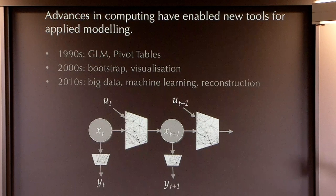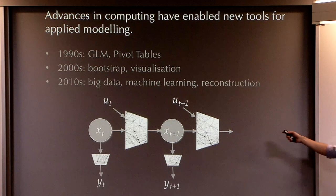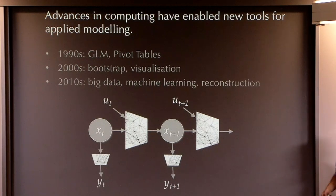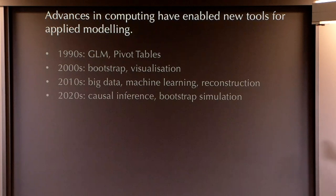I'm by no means an expert on this. There are papers around, and I think the techniques for solving these things, training them, are just beginning to be available. So that's what the present looks like, or the near future. And what I'm most excited about for what comes next, I call it causal inference and bootstrap simulation.